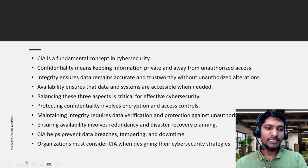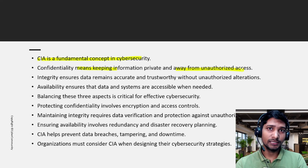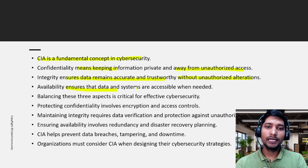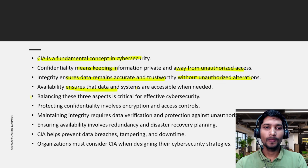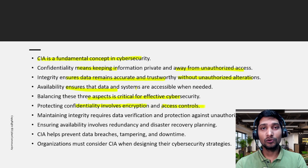To summarize some key points: CIA is a fundamental concept in cybersecurity. Confidentiality means keeping information private and away from unauthorized access. Integrity ensures data remains accurate and trustworthy without unauthorized alterations. Availability ensures that data and systems are accessible whenever required. Balancing these three aspects is critical for effective cybersecurity. Protecting confidentiality involves encryption and access controls.